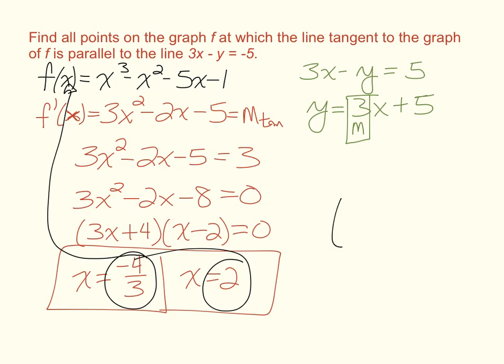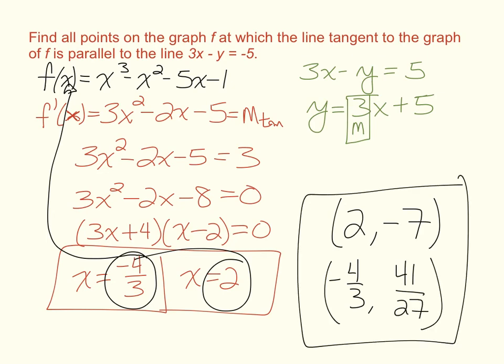And when you do that, you will see that you get the ordered pair 2, negative 7, and the other ordered pair, negative 4 thirds, comma, 41 over 27. Here are the points where you have a line tangent to the graph of f that is parallel to the line 3x minus y equals negative 5.